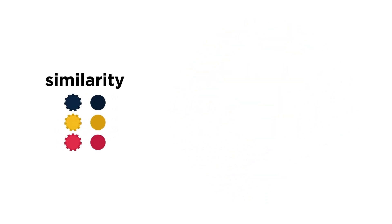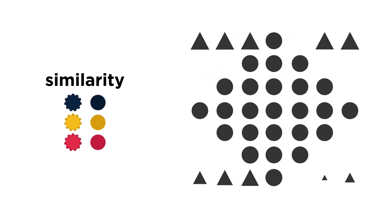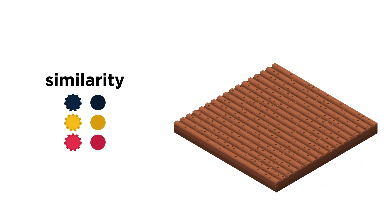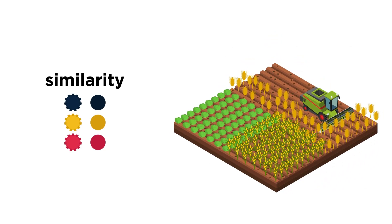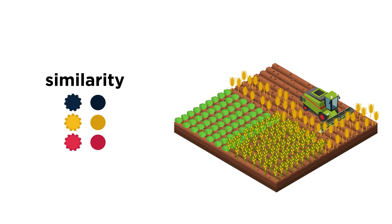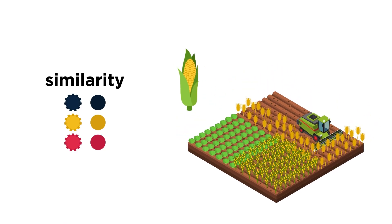The principle of similarity states that we perceive objects which are physically similar to be parts of the same object. This lets us differentiate between adjacent and overlapping objects based on their physical characteristics. For example, if there was a large field where multiple different crops grew side by side, your mind would probably group similar crops together based on their color and texture. There would be a corn group next to a cabbage group next to a wheat group, and so on.